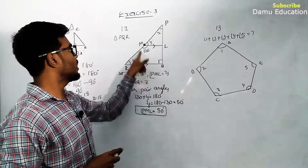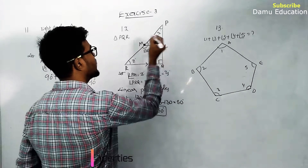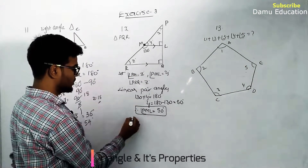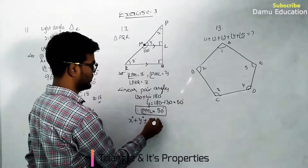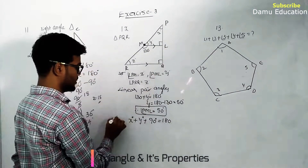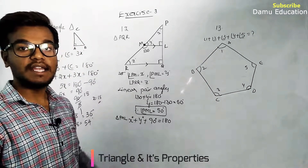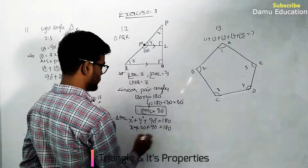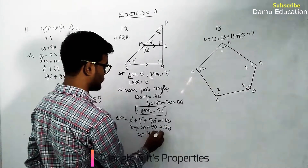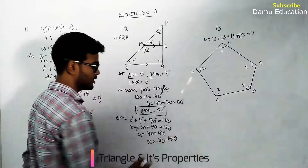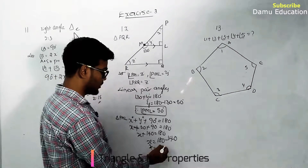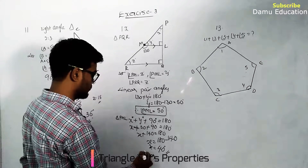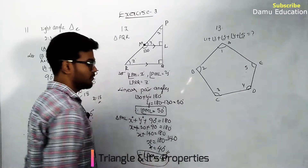Since RQ and ML are parallel to each other, corresponding angles give angle L equal to 90 degrees, making it also a right angle. Applying the angle sum property to triangle PML: x plus y plus 90 equals 180 degrees. With y equal to 50, we get x plus 140 equals 180, so x equals 40 degrees. Therefore angle LPM equals 40 degrees.